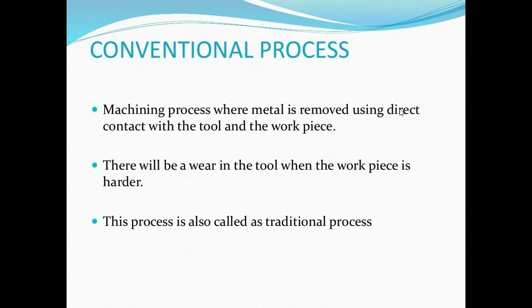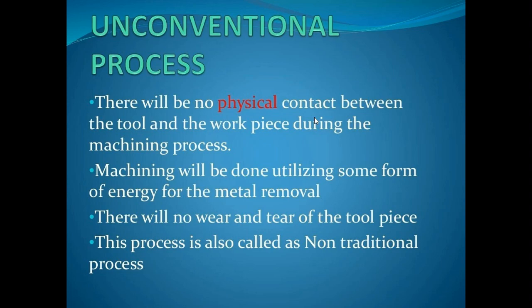This is also called the traditional machining process. Now, unconventional machining process means there is no physical contact between the tool and the workpiece during machining. While metal is being removed, the tool and the workpiece are not in physical contact — some gap will be there. This type of process is called unconventional machining process.